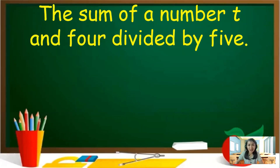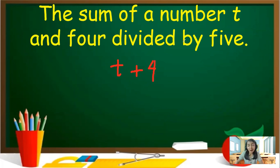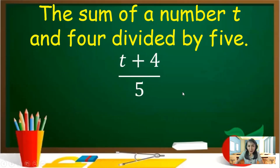Next: 'The sum of a number T and 4, divided by 5.' Sum means addition — add T and 4 to get T plus 4. 'Divided by' means from top to bottom — 5 will be the denominator. The answer is (T + 4) over 5.